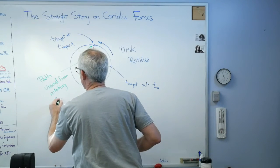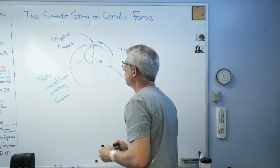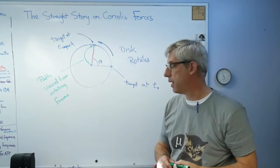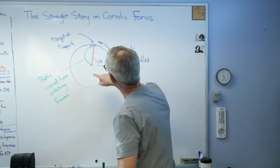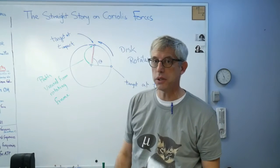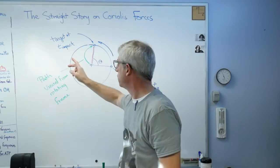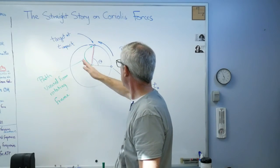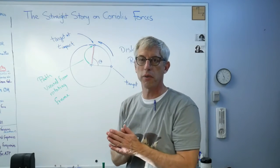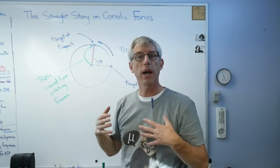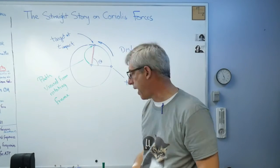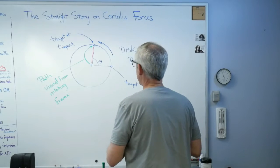Path viewed from a rotating frame. What that rotating frame means is that I'm standing on the disc. That's what the path looks like—it looks like it's curved. It looks like this thing shot a projectile and it curved not just vertically because of gravity, but horizontally as well. That's the Coriolis effect.